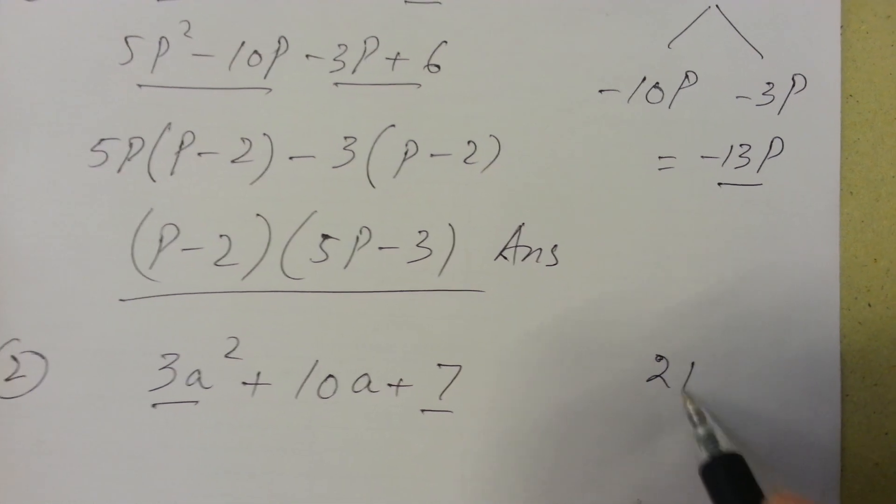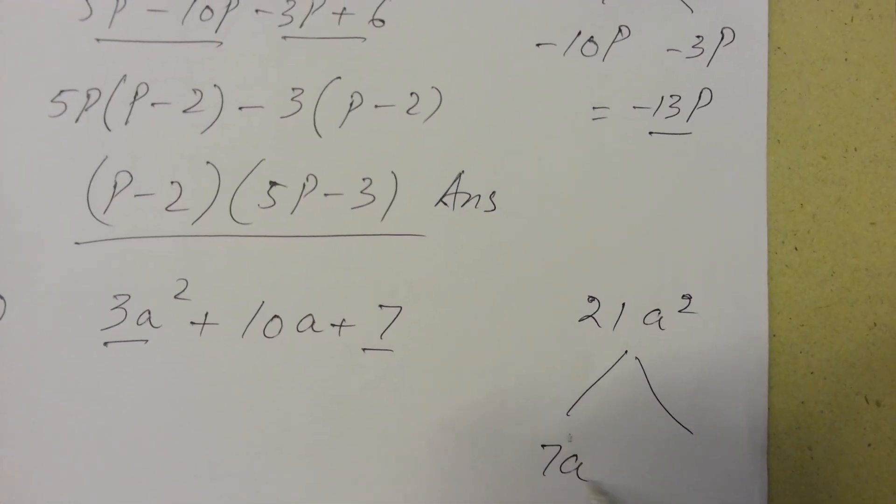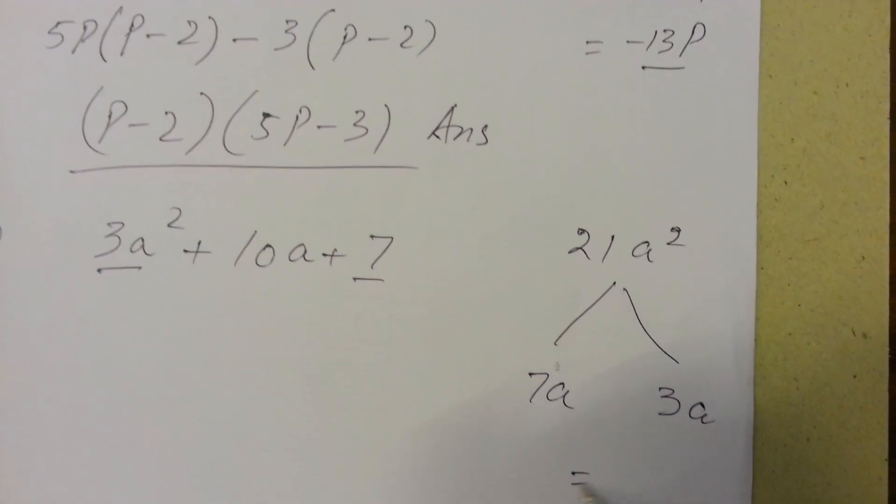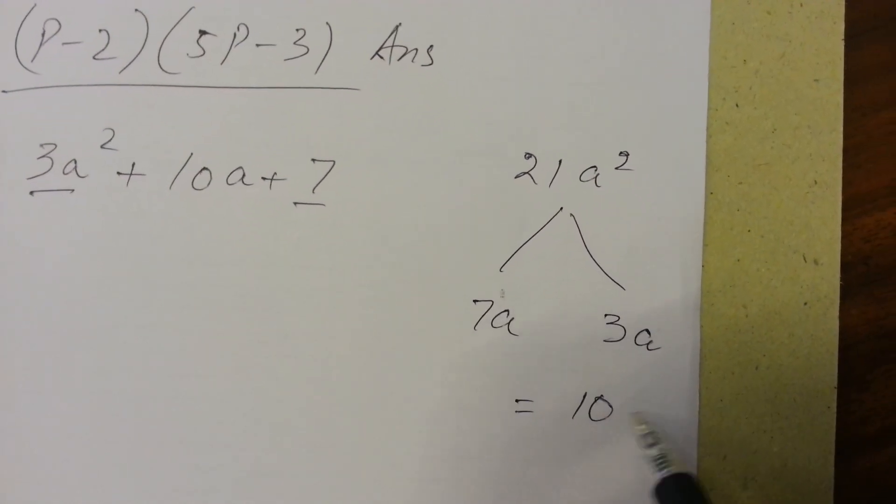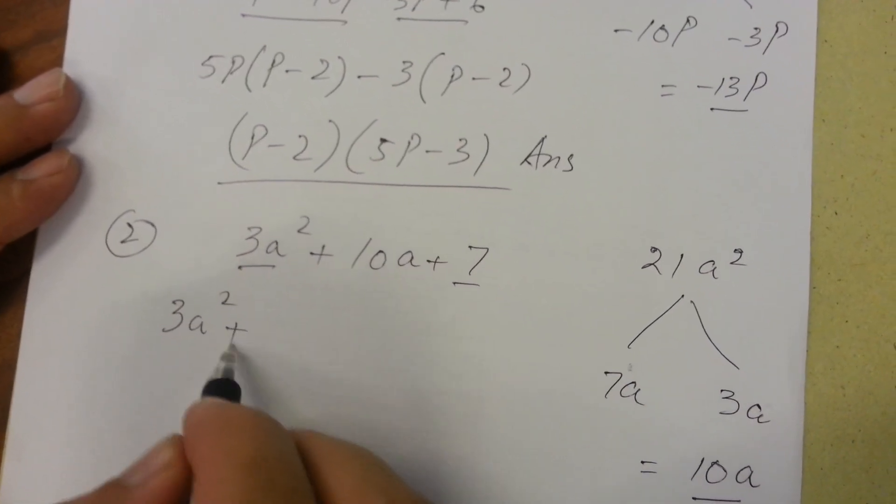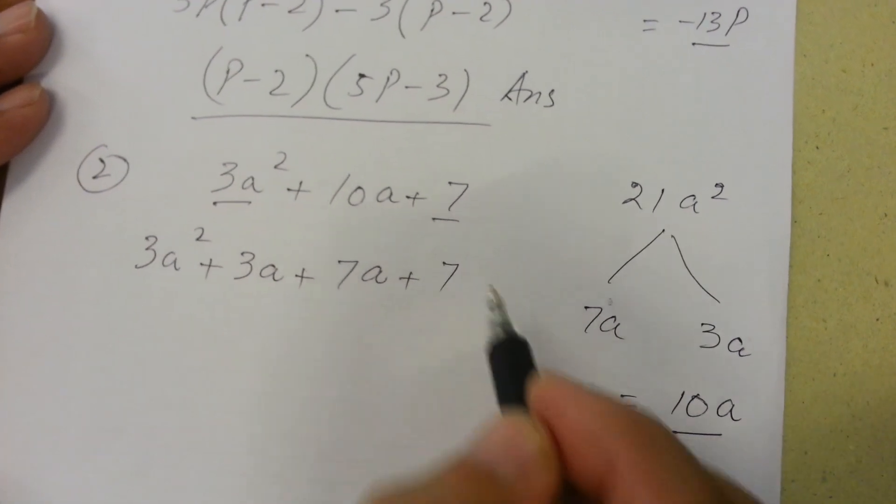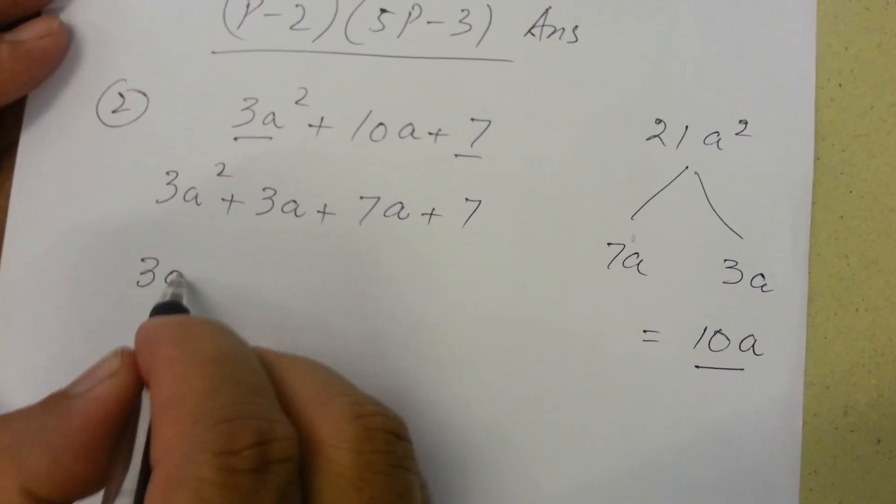...we will get 21a². Now splitting these, there will be 7a and 3a because we want middle term 10a on addition. There will be 3a² + 3a + 7a + 7. Taking 3a common...